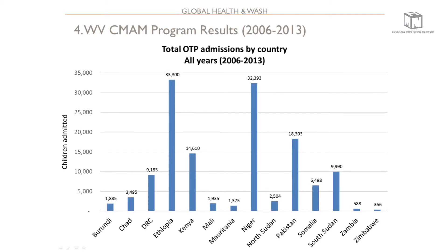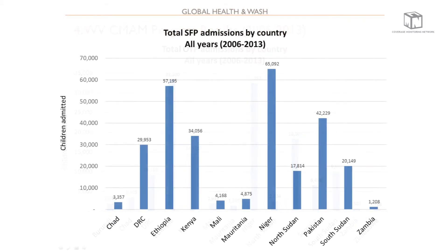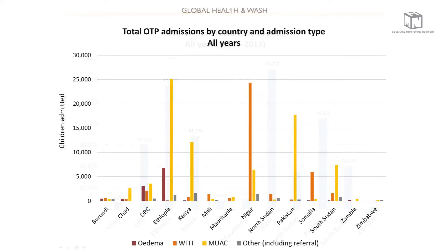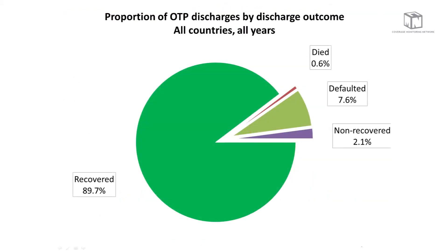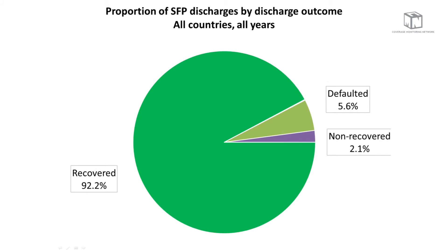Now I'll go through some of the results and analysis, which was helped by a student from Johns Hopkins University. Our national offices are generating these reports and graphs to make programmatic decisions. We analyzed total OTP admissions by country from 2006 to 2013, as well as SFP admissions, and OTP admissions disaggregated by admission criteria — edema, weight-for-height, MUAC, and others including referrals from SCs. For OTP discharges across all 14 countries from 2006 to 2013, the recovery rate was 89.7%, above the Sphere standard of 75%. The SFP cure rate was 92.2%.